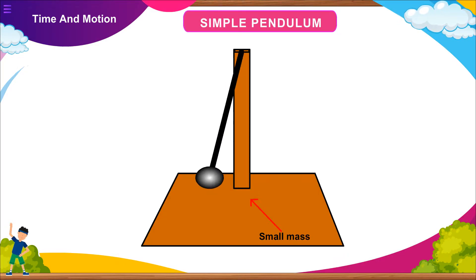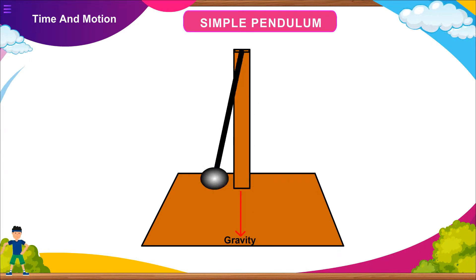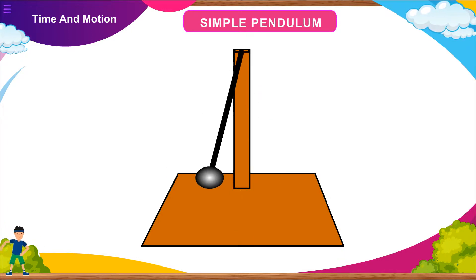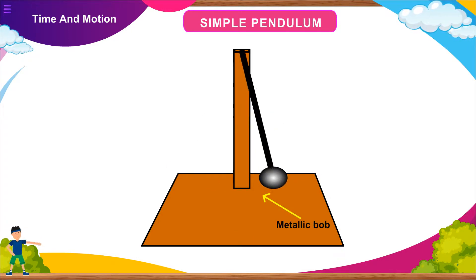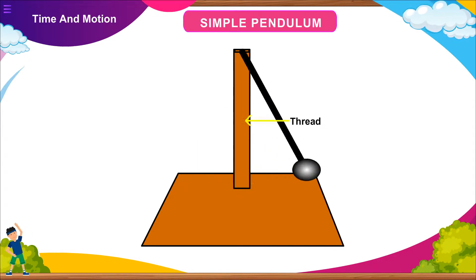Simple pendulum: A small mass suspended from a fixed point and allowed to swing freely under the influence of gravity is called a pendulum. A simple pendulum consists of a small metallic bob suspended from a rigid stand by a thread.